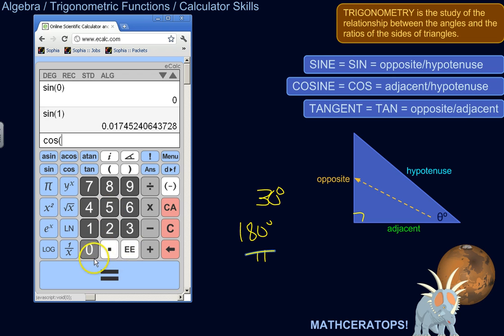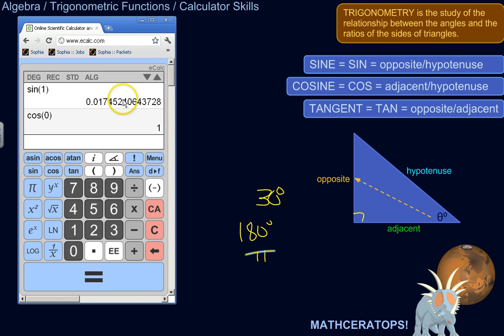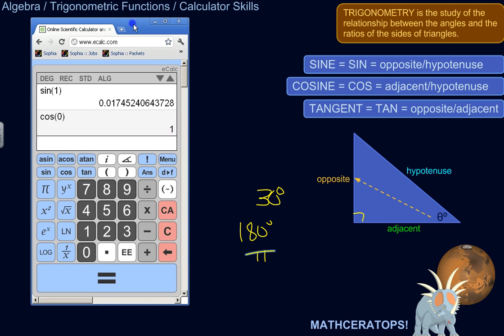Then you could do cosine. So the cosine of 0 is 1. So basically your calculator can give you these values really quickly. Now, later on in life, you'll learn the unit circle and you'll know some of the basic ones. Like sine of 30 degrees, sine of 45 degrees, sine of 60, sine of 90 degrees. Because those are nice numbers.